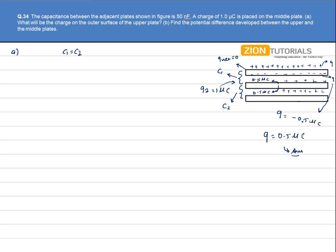In the second part, we have to calculate the potential difference developed between the upper and the middle plate. Using the formula Q equals CV, we have charge as 0.5 micro coulomb and capacitance given as 50 nF, which is 50 into 10 to the power minus 9. So V equals 0.5 into 10 to the power minus 6 divided by 50 into 10 to the power minus 9.